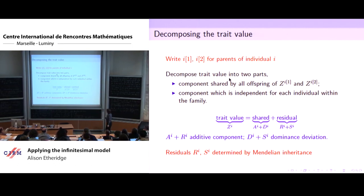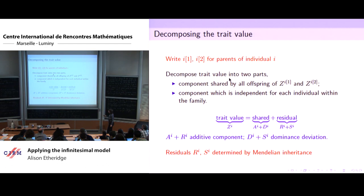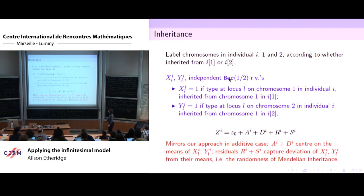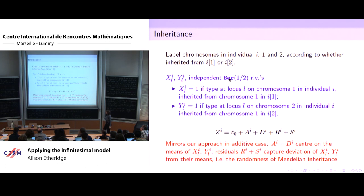In more traditional quantitative genetics language, you would split things into A_i + R_i for the additive component, and D_i + S_i for what's called the dominance deviation. We find it more informative to divide into the shared value and the residuals. Just as Amandine introduced Bernoulli random variables to describe Mendelian inheritance and propagate trait values from one generation to the next, we do the same here.